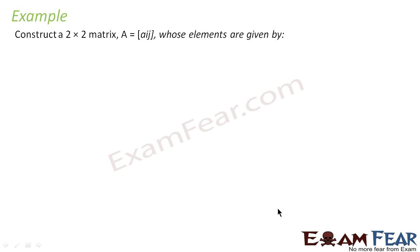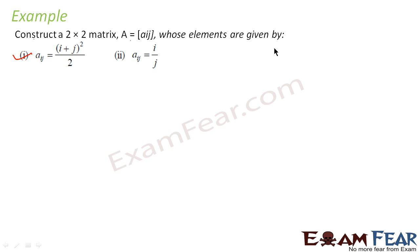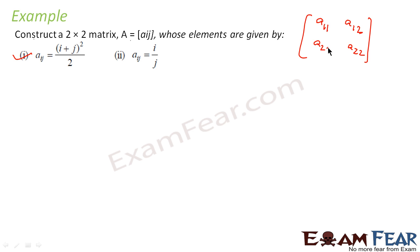We have to construct a 2×2 matrix where the element is given by aij = (i+j)² / 2. Let's take the first part. We construct the matrix where elements are given by this formula. A 2×2 matrix has elements a11, a12, a21, and a22 — this is the general representation of the matrix.